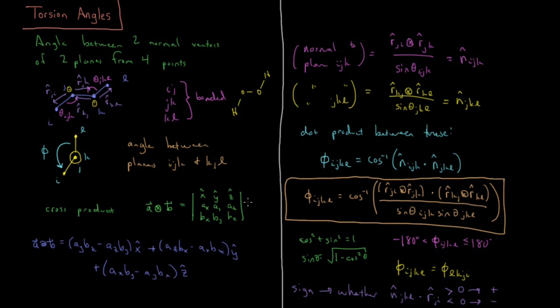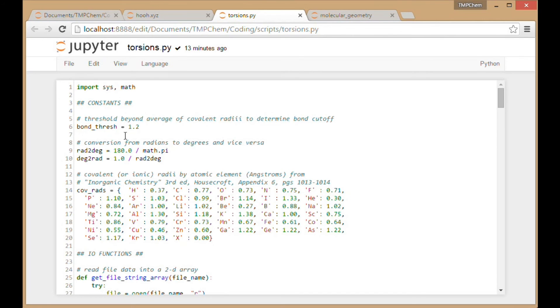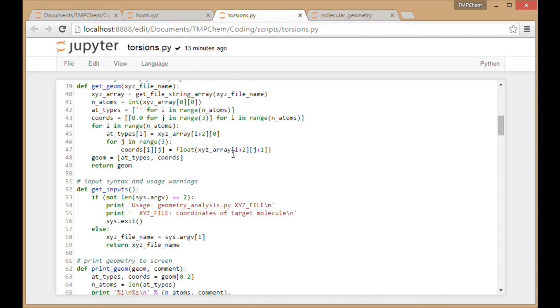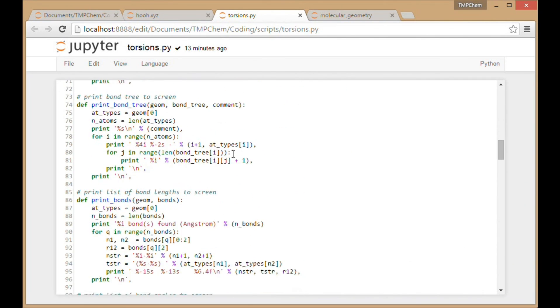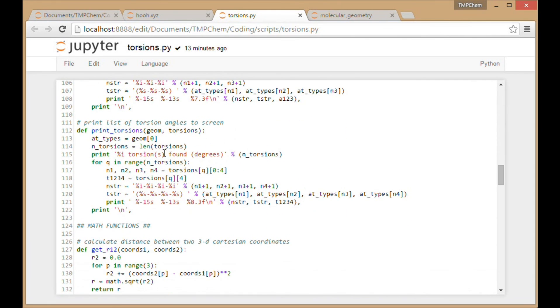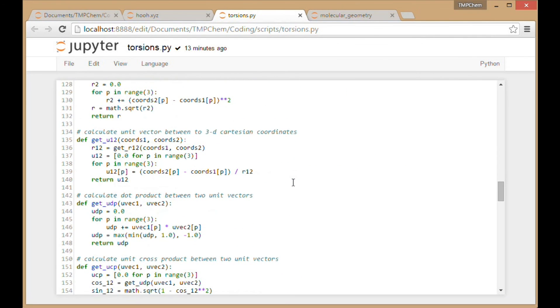So quickly moving along to our web browser, we have our program here inside of Jupyter, now called torsions.py instead of angles.py. So let's scroll through this and see what's new relative to last time. A lot of the same functionality as before. The first new function we're going to get is one that will be printing out all of our torsion values once we have found all of them.